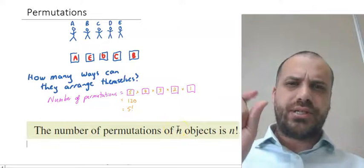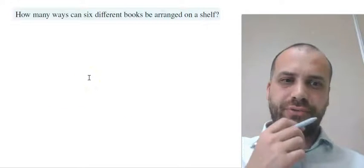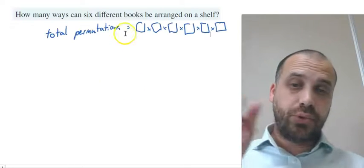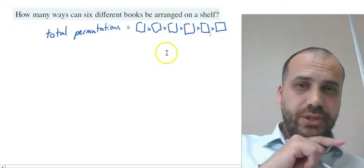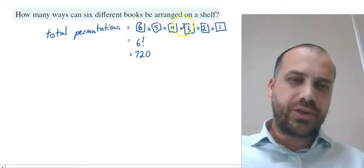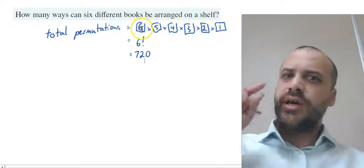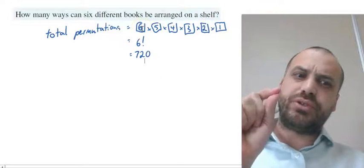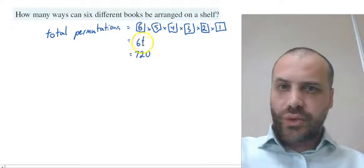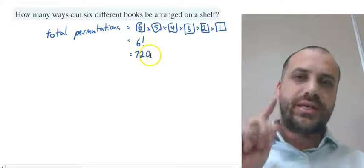Let's do a couple more examples. How many ways can six different books be arranged on a shelf? It's just books instead of people. There are six different books being put in six different spots, and it's going to be six times five times four times three times two times one. The equivalent version of this is just six factorial, which is 720.